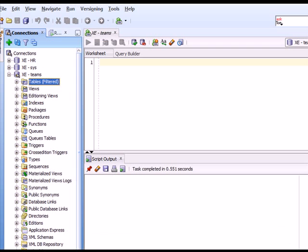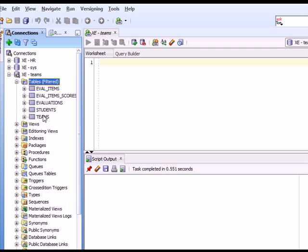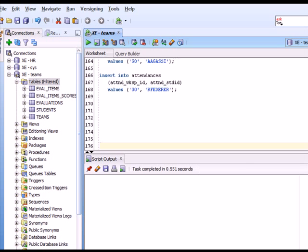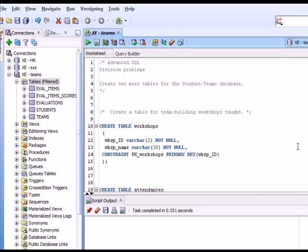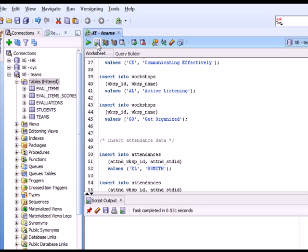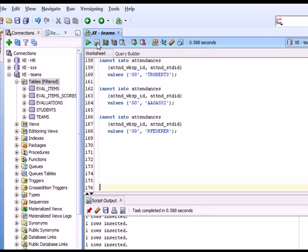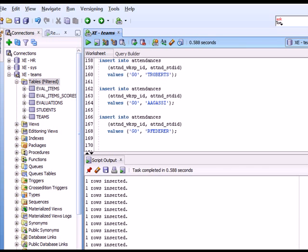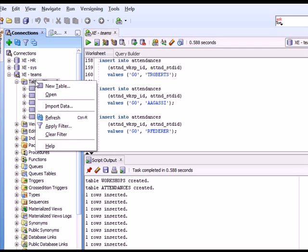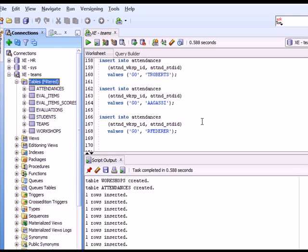I'm going to switch over to SQL developer and see that I have my database for the teams in the team schema. I'm going to paste in the code from the script that includes creating the tables as well as populating them. And then I will execute in script mode. I will see that I've created tables and rows have been inserted. So now if I come over here to the tables and do a refresh, I'll see that I have attendances and I also have workshops.